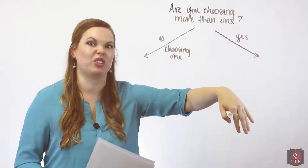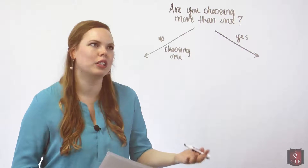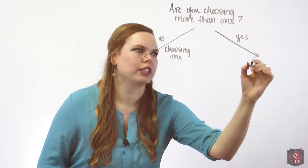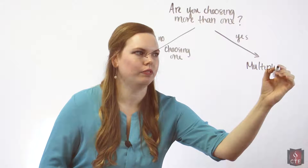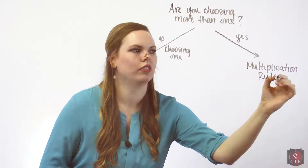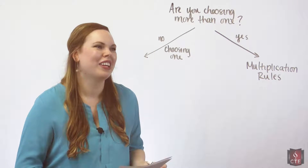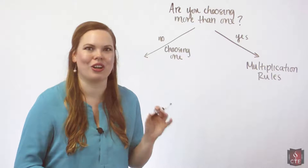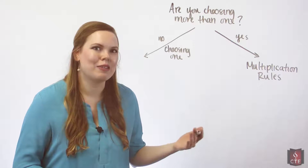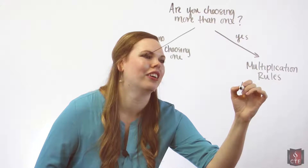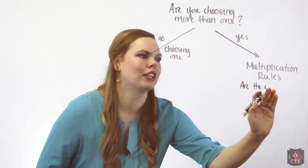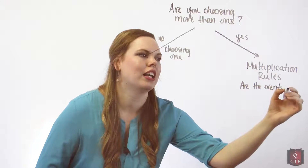If the answer to the first question is yes — I'm choosing more than one, I'm flipping the coin more than once — then we know we are going to be using some multiplication rules. The next question we have to ask ourselves is: are these two events independent? Do they have an effect on each other?